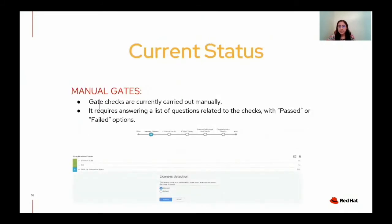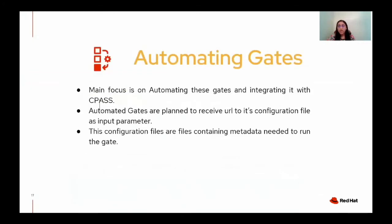Currently, these gates are carried out manually. In the manual execution, it asks the user to explicitly mention whether a particular test case is passing or failing for their product. Based on the user input, the test cases will run producing results. Currently, product teams need to run the checks with their own solution, existing infrastructure, and by answering a list of questions related to those checks. Our team is focusing on automating these gates and integrating them with CPaaS, that is continuous productization as a service. This summer I helped the team in automating one of the gate checks and also automating the process of releasing a new version of the gates pipeline. Automated gates are planned to receive a URL to its configuration file as an input parameter — these configuration files contain some metadata needed to run the gate.